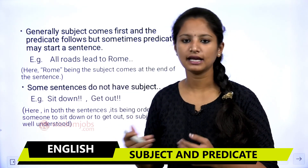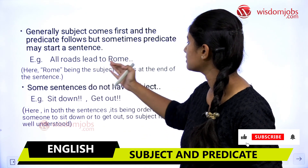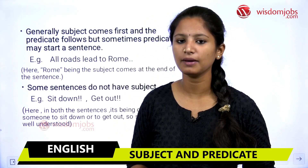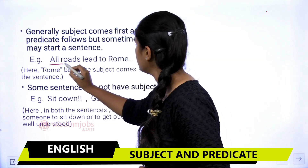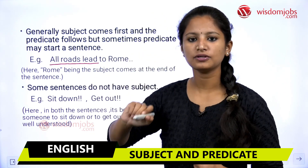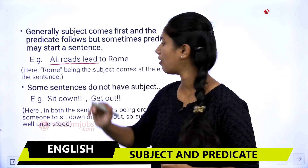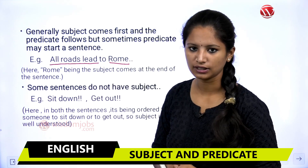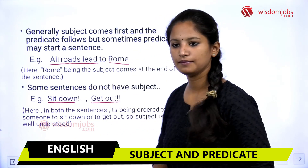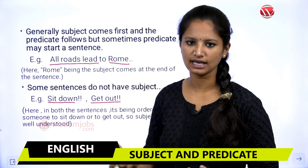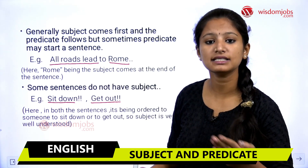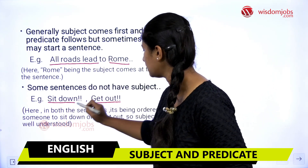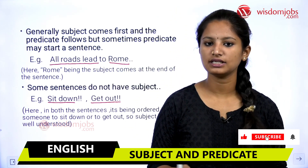Generally, subject comes first and then predicate follows — for example, 'All roads lead to Rome.' However, there are also sentences where the predicate comes first and the subject follows. And there are sentences where the subject is completely absent, such as 'Sit down,' 'Get out,' 'Eat your food.' There are many such sentences where the subject is completely absent, but they are still considered sentences where only the predicate works.